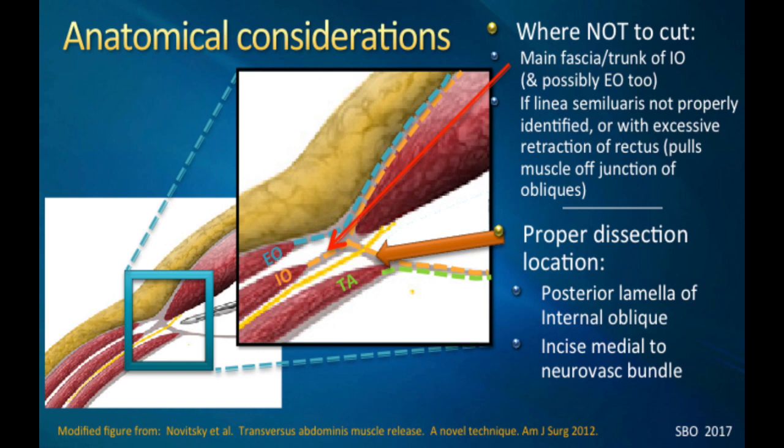We've certainly seen our fair share of new lateral wall semilunar line ventral hernias. Also, excessive retraction of the rectus muscle laterally can lead to sliding the muscle off of the anterior rectus sheath, which can disrupt the orientation. You may not realize where the true semilunar line is and may end up dissecting too far laterally.